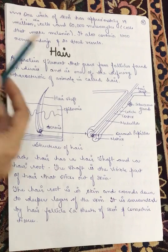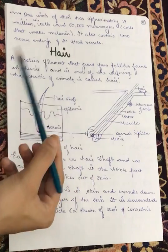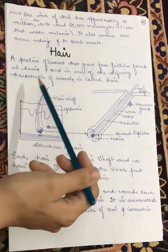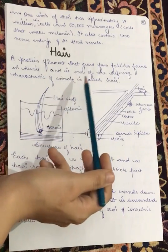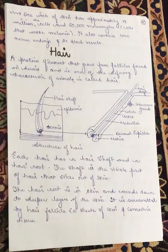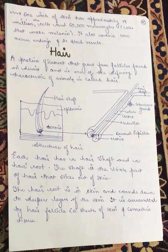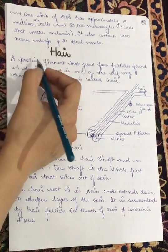Hair is a protein filament that grows from follicles found in the dermis and is one of the defining characteristics of mammals. We all know that as mammals, hair is our defining feature. So basically, hair is a protein.